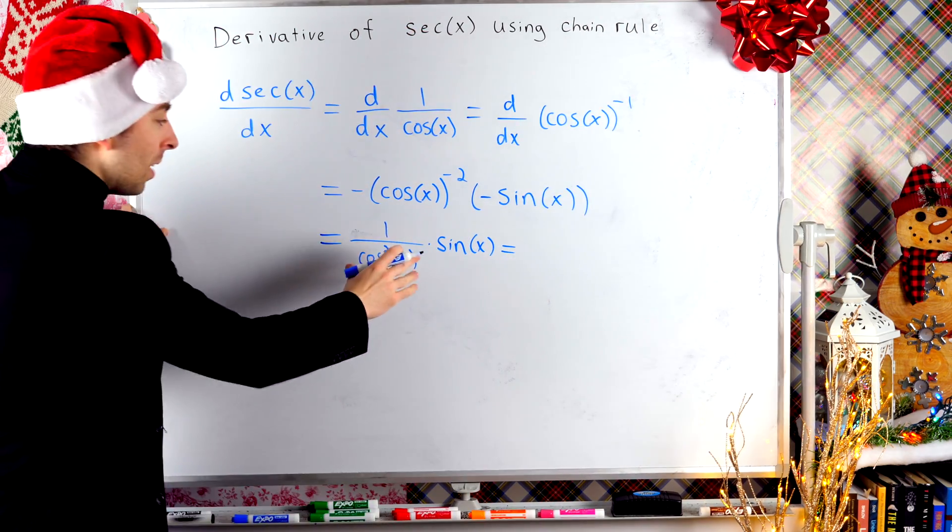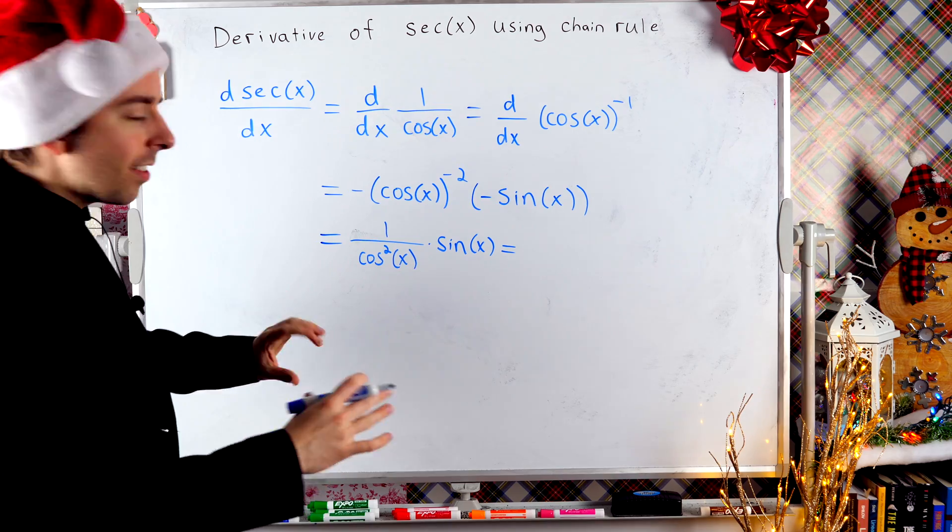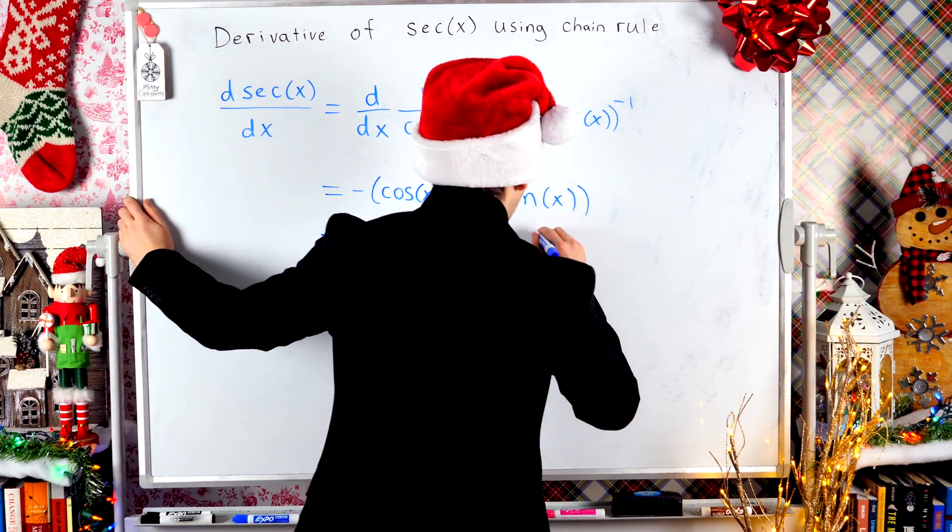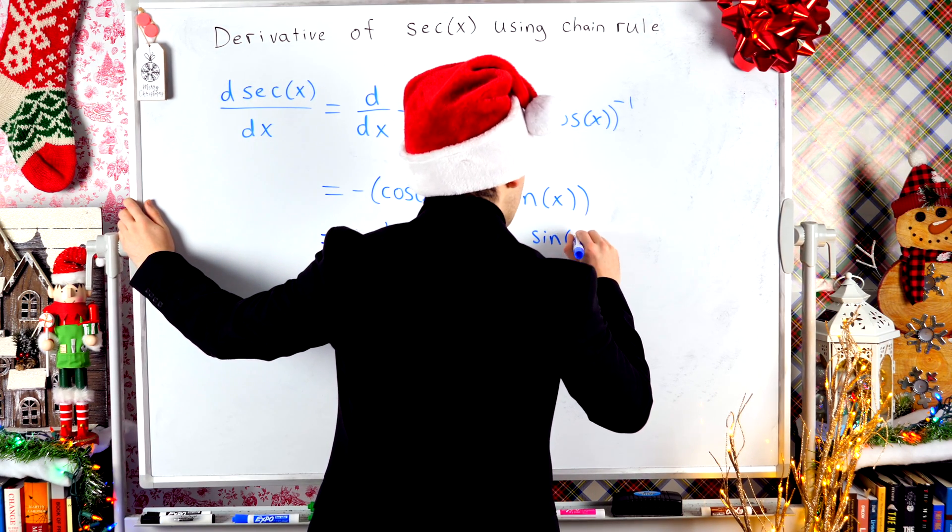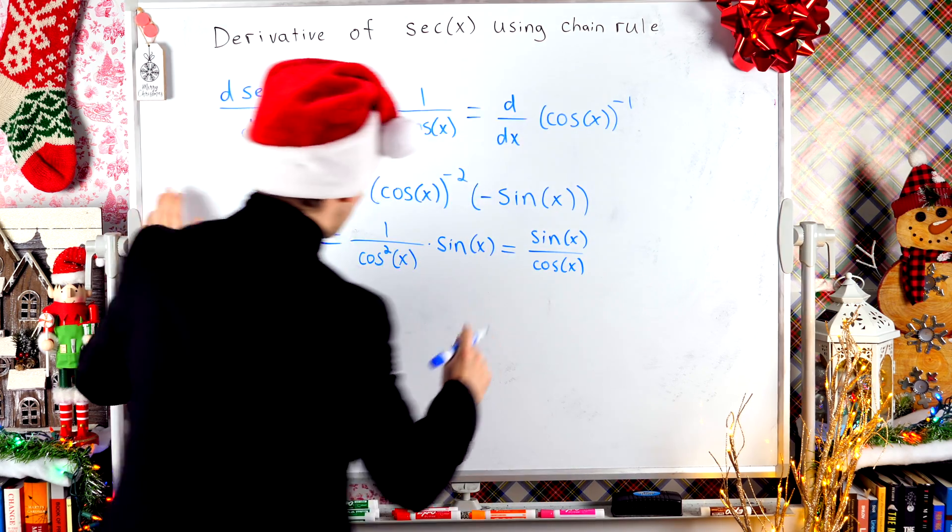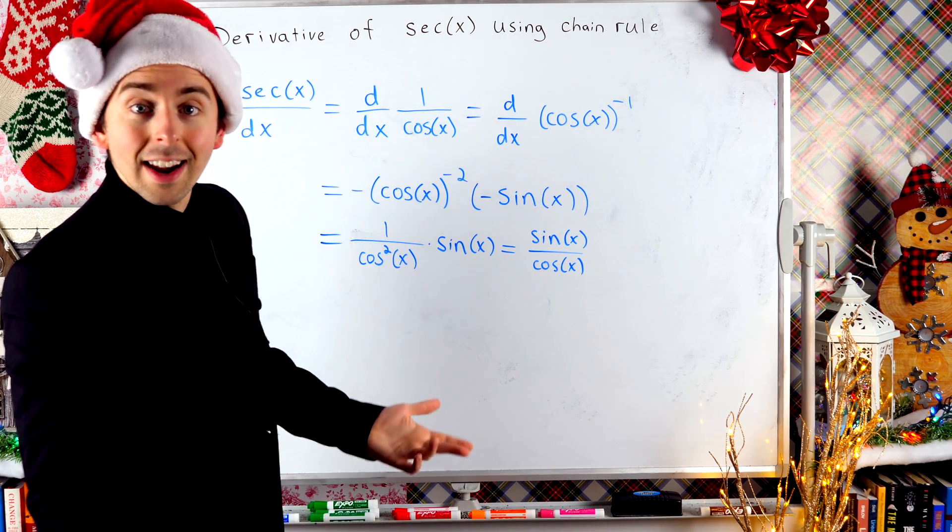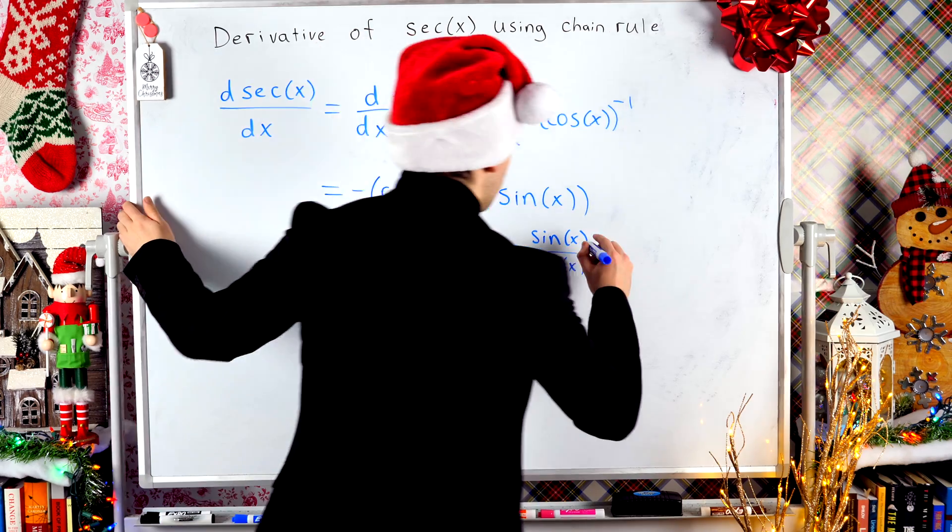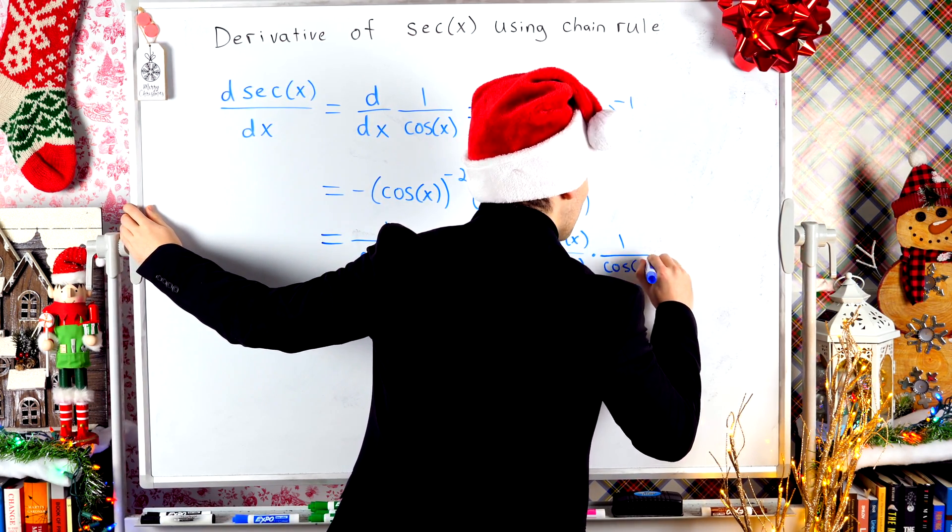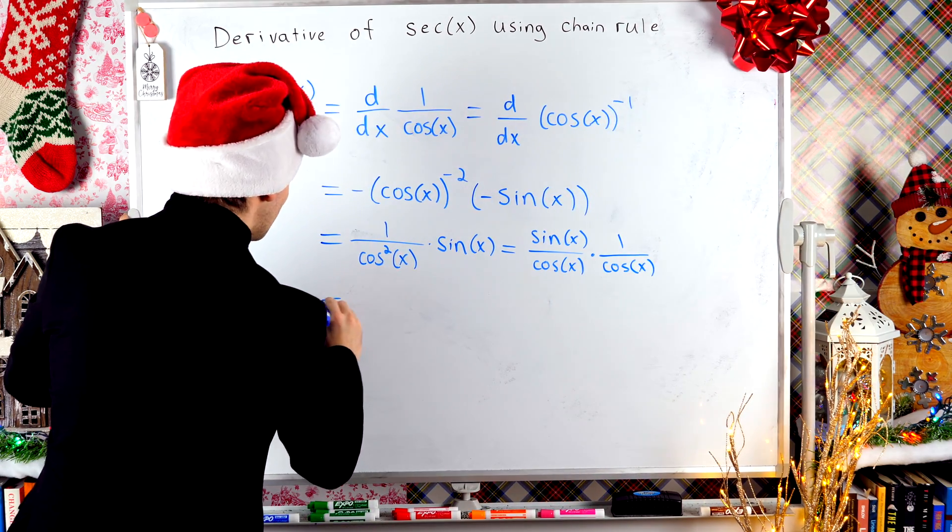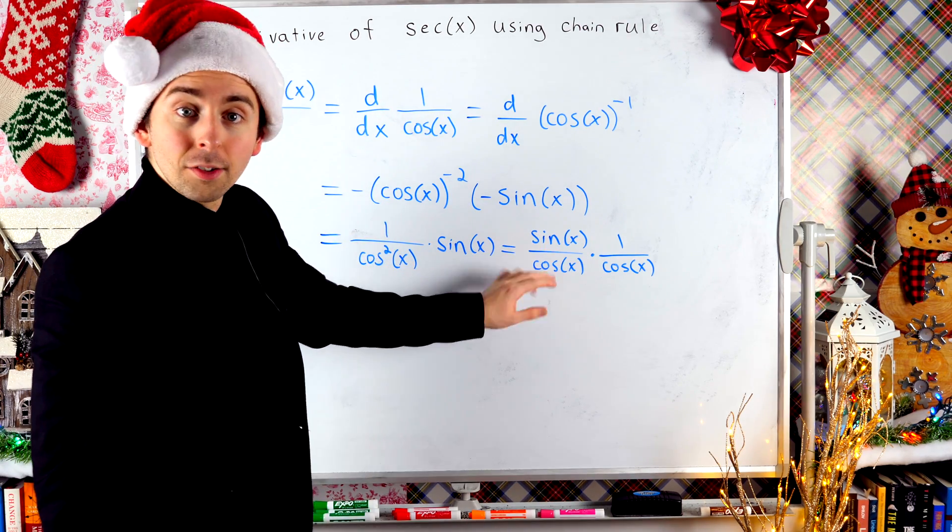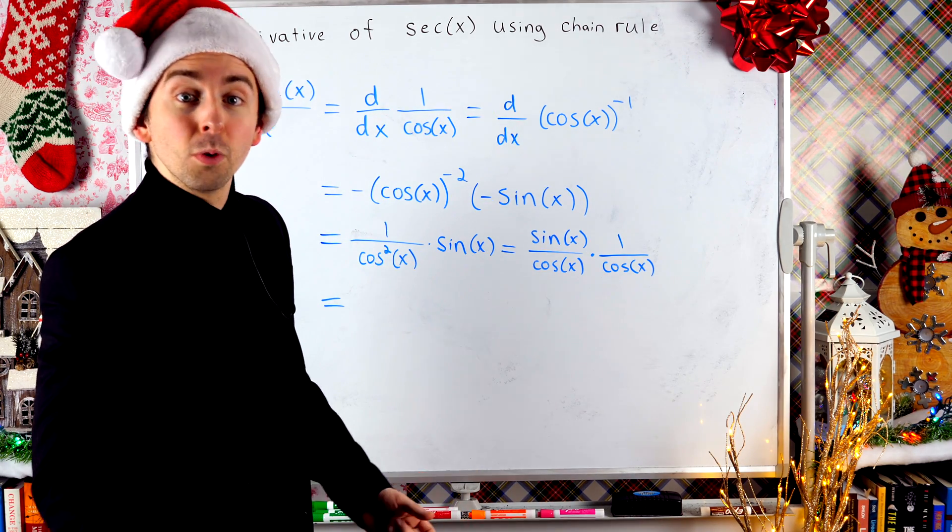All right, now let me rewrite this. Let's separate the two factors of cosine. So I'm going to write this as sine of x over cosine of x. But remember, we still have a factor of cosine x in the denominator. So then we'll just multiply this by that one over cosine x. Now, what is this equal to? We've separated the factors into some trigonometric functions you should recognize.